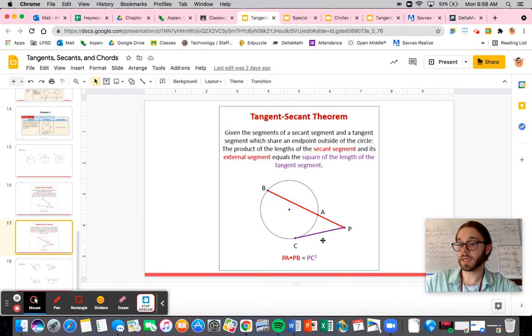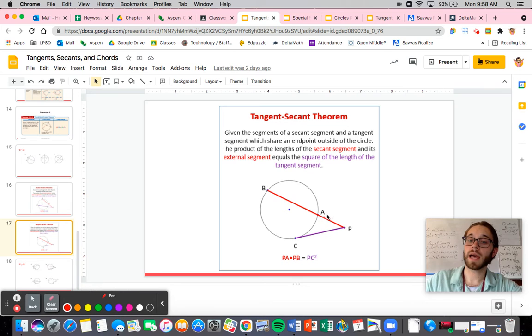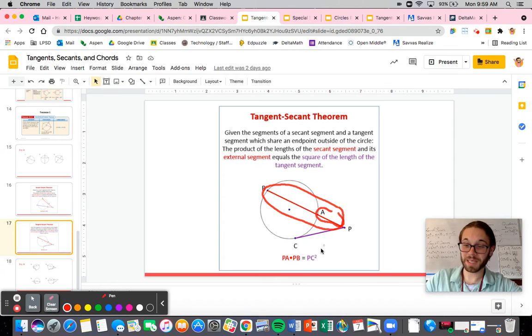Similarly, if you have a secant and a tangent, you still have the outside part times the whole thing. The only problem is this one is completely outside. So the outside part times the whole thing is just the whole thing times the whole thing. So it's the whole thing squared. When you have a tangent and a secant, you're going to have one side squared and the other side—don't forget—it is the outside part times the whole thing.